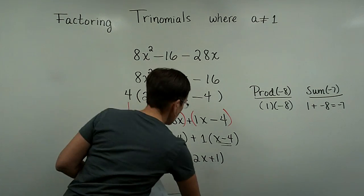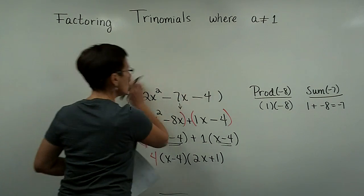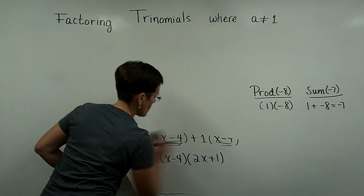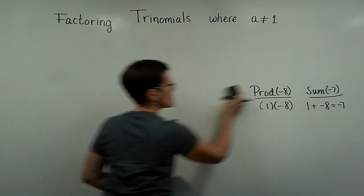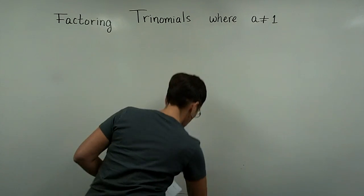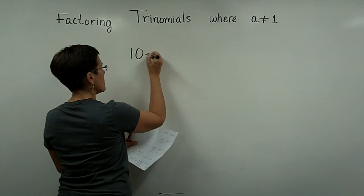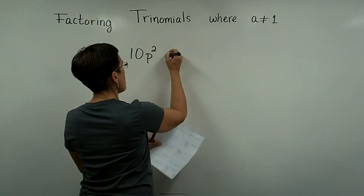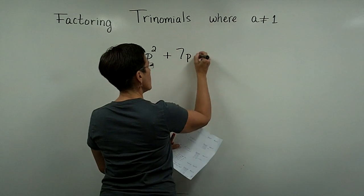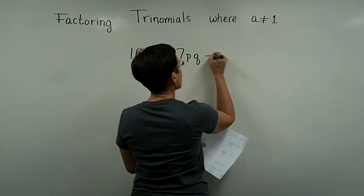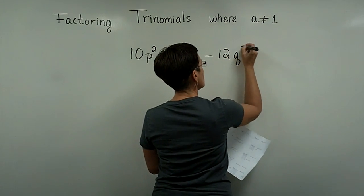Let's now look at one that has p's and q's and p's and q's and q squareds. So let's take a look at that. It could have x's and xy's, but I've chosen to do one with p's, the letter p: p squared plus 7pq minus 12q squared.